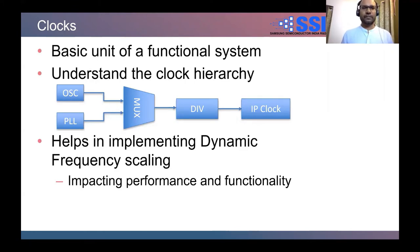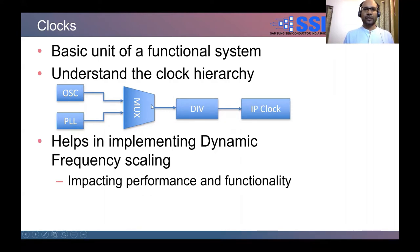When it comes to clock — clock is the basic unit of a functional system; if the clock is not there, nothing is going to work. One should understand the complete clock hierarchy. A typical hierarchy has an oscillator clock, a PLL generator, then a MUX, and then the frequency gets divided by some division factor and supplied to the clock IP. This hierarchy also tells you what various clock gates are available — for example, a clock gate might be available after the divisor or from the MUX output going to multiple devices. All that information comes from the clock hierarchy. This also helps in understanding and implementing dynamic frequency scaling, which impacts performance and functionality of the system.